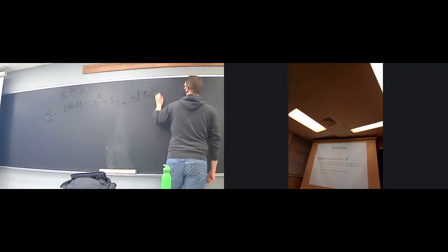We know that delta H is going to be: negative 16 times (T plus delta T) squared plus 100, minus negative 16T squared plus 100, all divided by delta T.